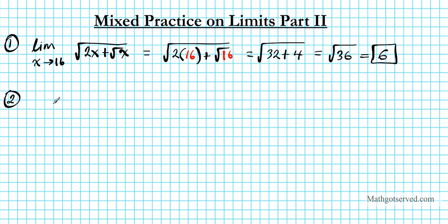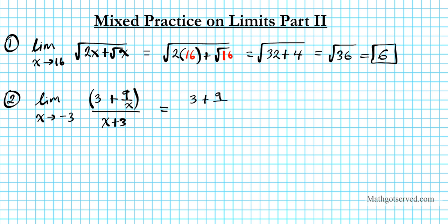Let's move along to number two. In this case, we're going to be looking for the limit as x approaches negative 3 of 3 plus 9 over x, divided by x plus 3. It's obvious that when I plug in negative 3 into the denominator, I'm going to have an undefined scenario — we get 3 minus 3 over minus 3 plus 3, which is 0. So anything divided by 0 is undefined, so this doesn't work.